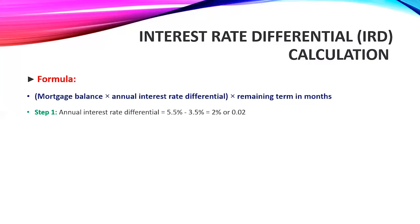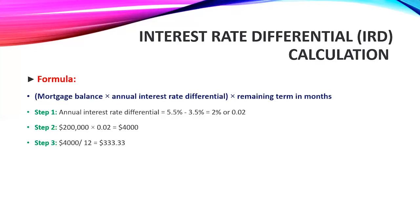Step 1 — calculate the interest rate differential: 5.5% minus 3.5% equals 2%. Step 2 — multiply the interest rate differential by the outstanding mortgage balance: $200,000 times 2% gives us $4,000. Step 3 — divide $4,000 by 12 to get the monthly amount. Step 4 — multiply by the remaining term in months. There are three years outstanding on the mortgage, so 3 times 12 equals 36 months. The answer is $12,000. So the penalty as per the IRD calculation is $12,000.